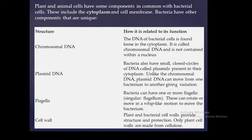The plant cell and animal cell have some components in common with the bacterial cell — these include the cytoplasm and the cell membrane. Bacteria also have other components that are unique to them, such as chromosomal DNA, plasmid DNA, the flagellum, and the cell wall.